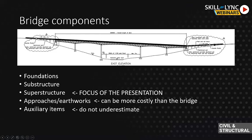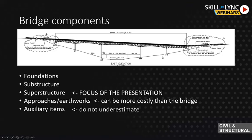For example, the approaches. In some cases the approach is quite small, but in a lot of cases the approaches and earthworks around the bridge can cost as much as the bridge itself. So you should not underestimate the amount of geotechnical and groundwork around the bridge. There are also auxiliary items like parapets, lighting, and access and maintenance — small items, often not as glamorous as bridge design itself, but they can contribute quite a lot of design fee and work. Never underestimate all the additional items in a bridge.